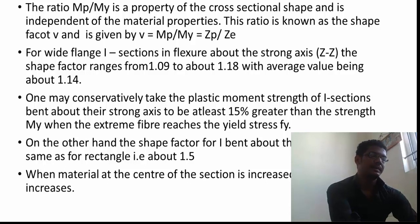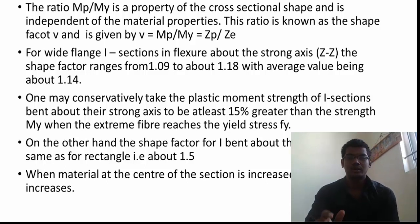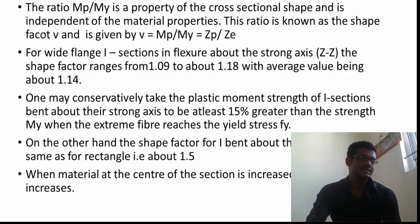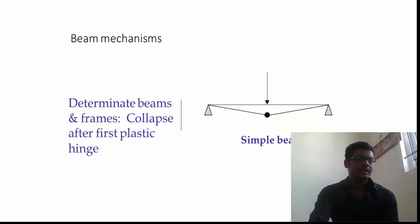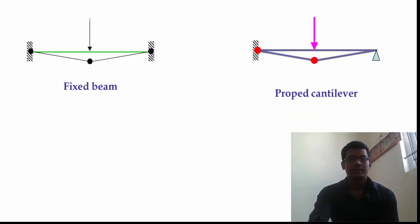Places of loading where MP is maximum are known as plastic hinges. This is called the upper bound theorem — when the moment reaches its maximum, it forms hinges. The minimum number of hinges equals the degree of indeterminacy plus one. In a simply supported beam, it is 1, since the degree of indeterminacy is 0. In a fixed beam, it is 3, since the degree of indeterminacy is 2, and 2 plus 1 equals 3.